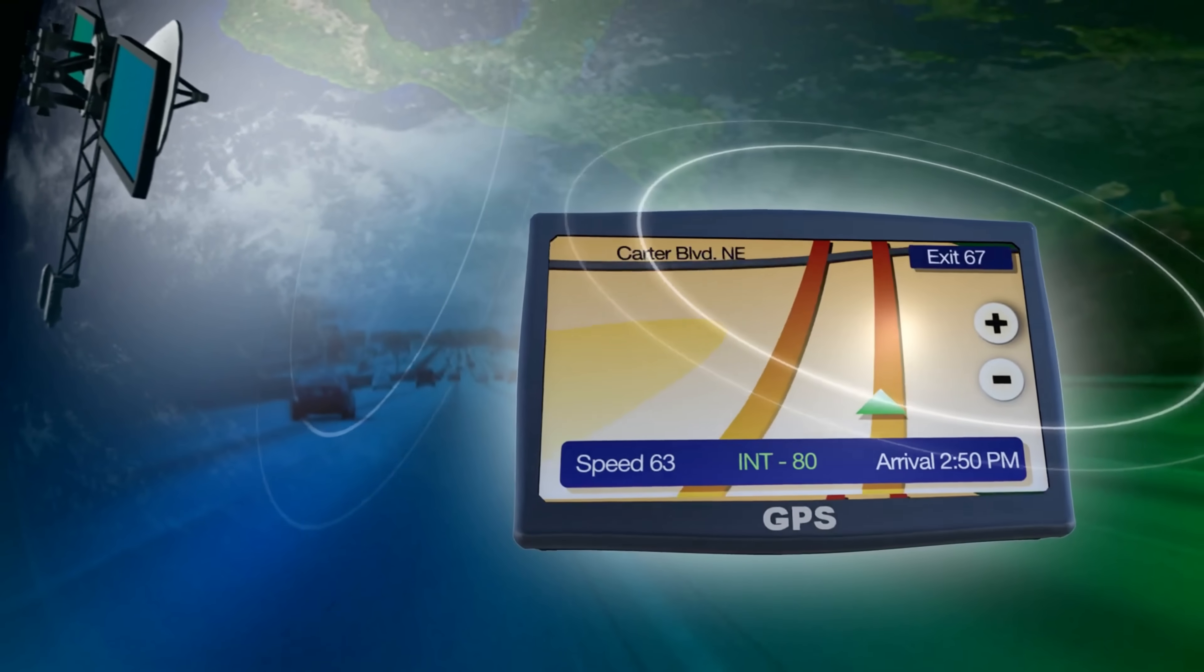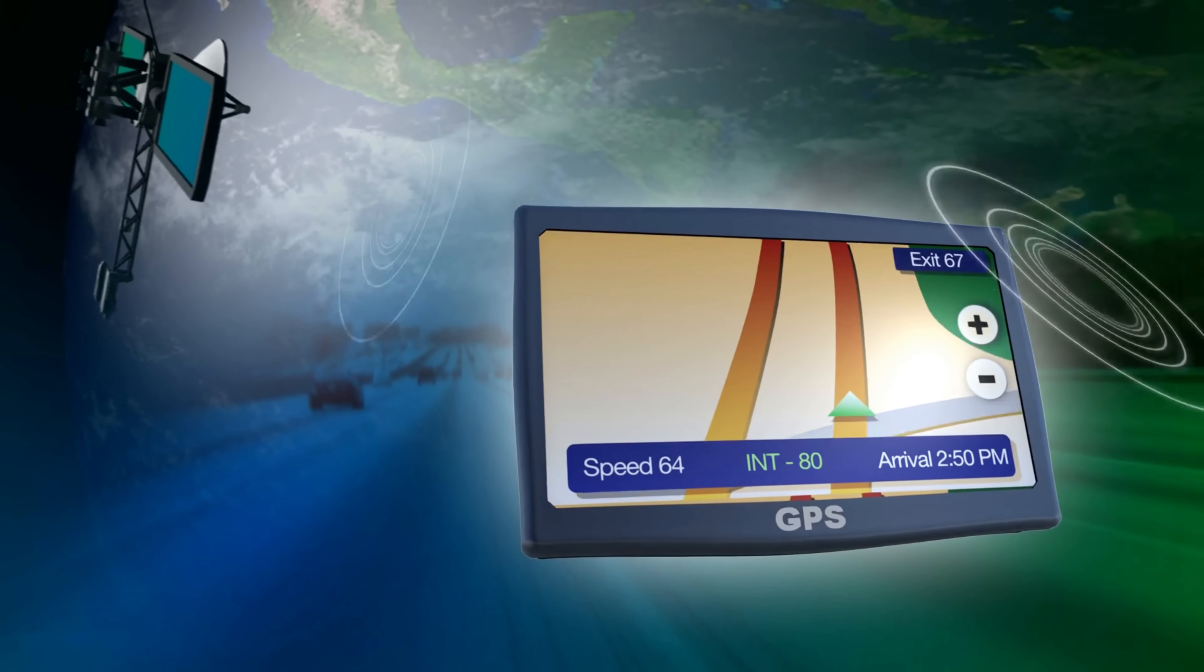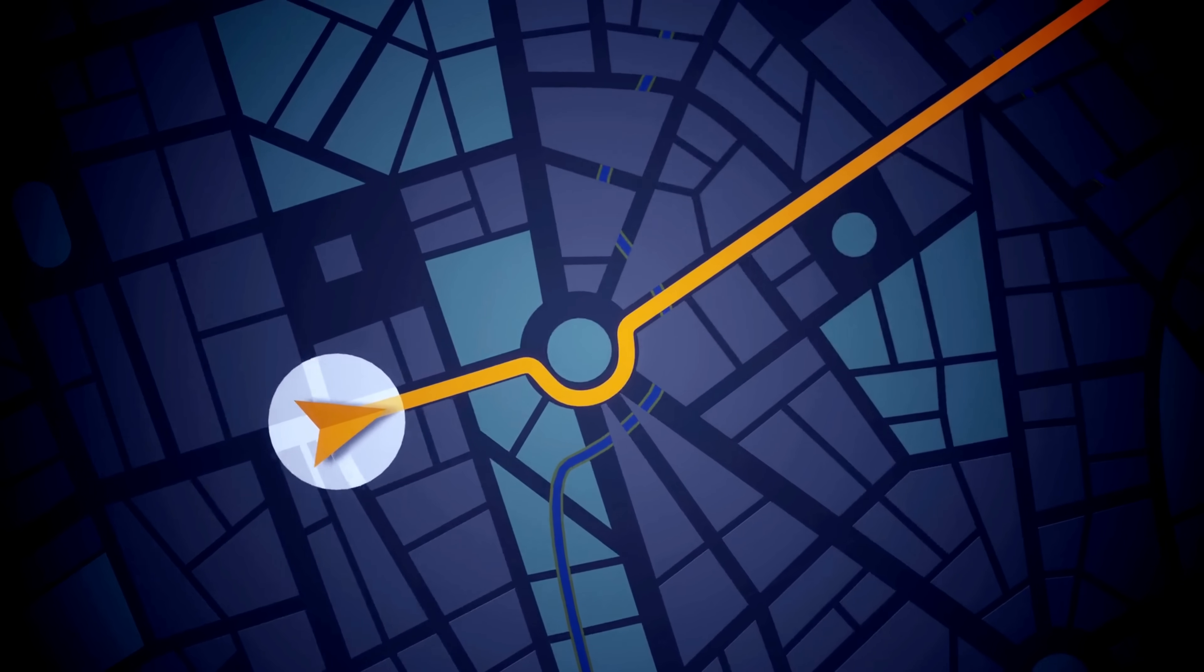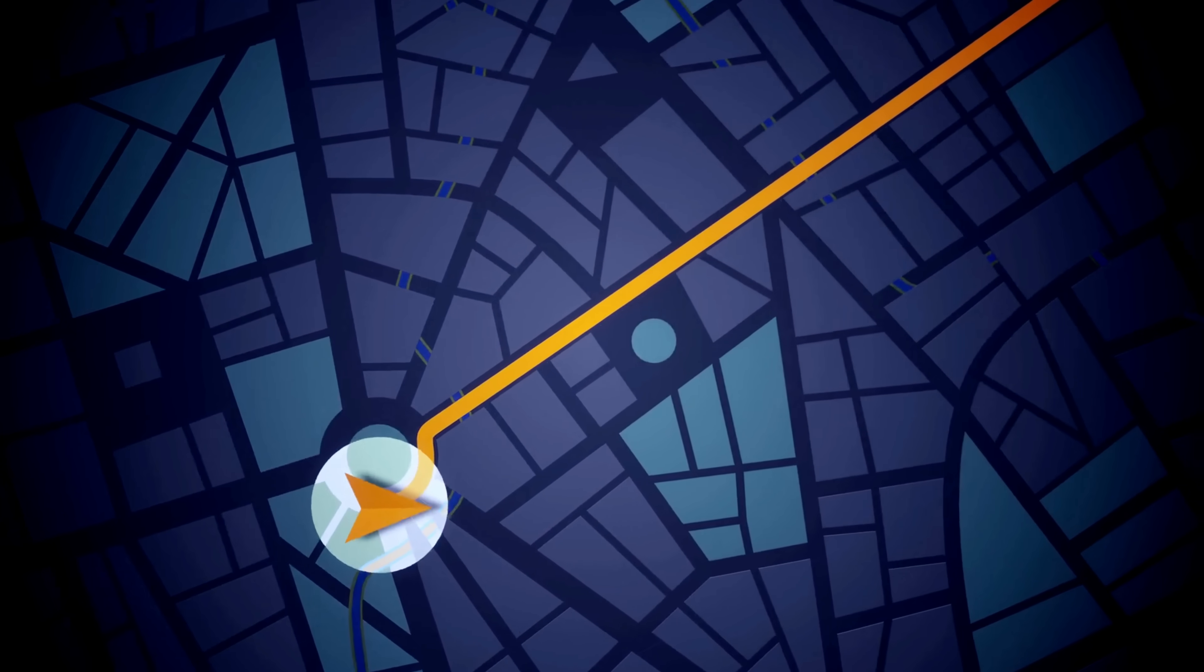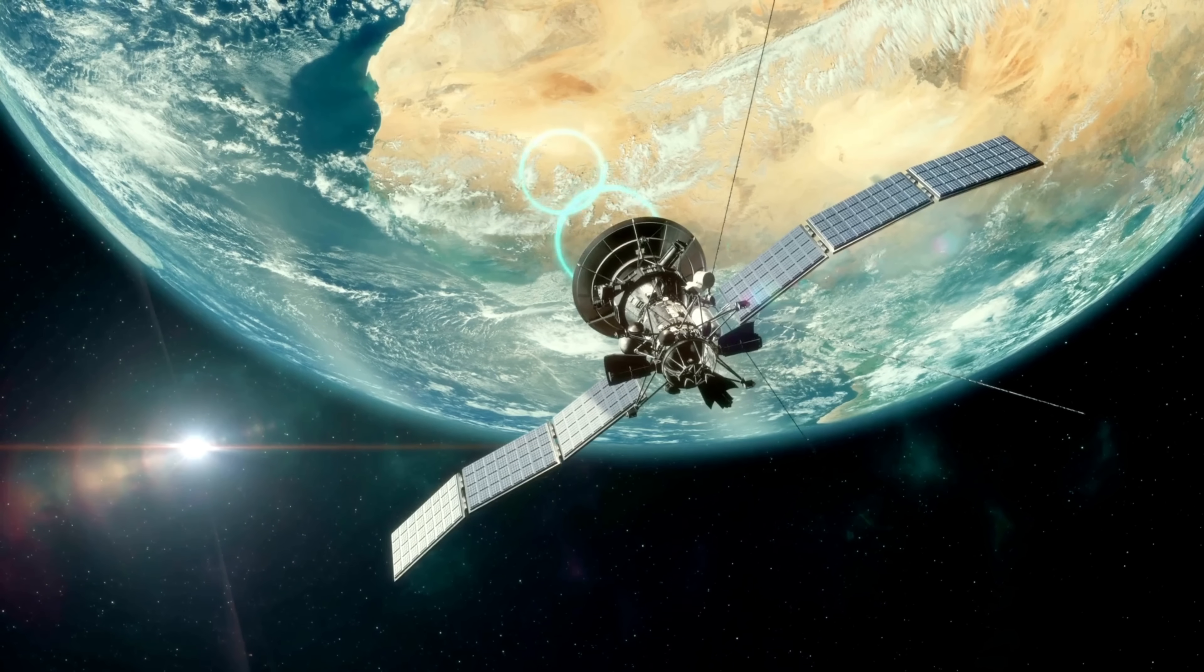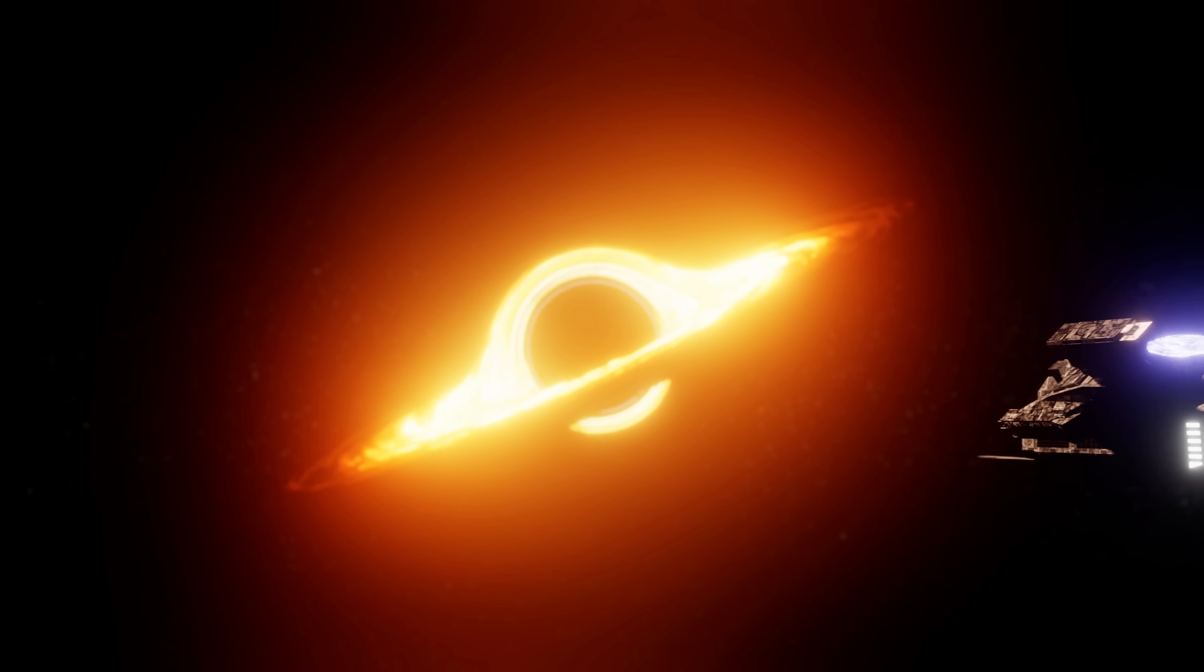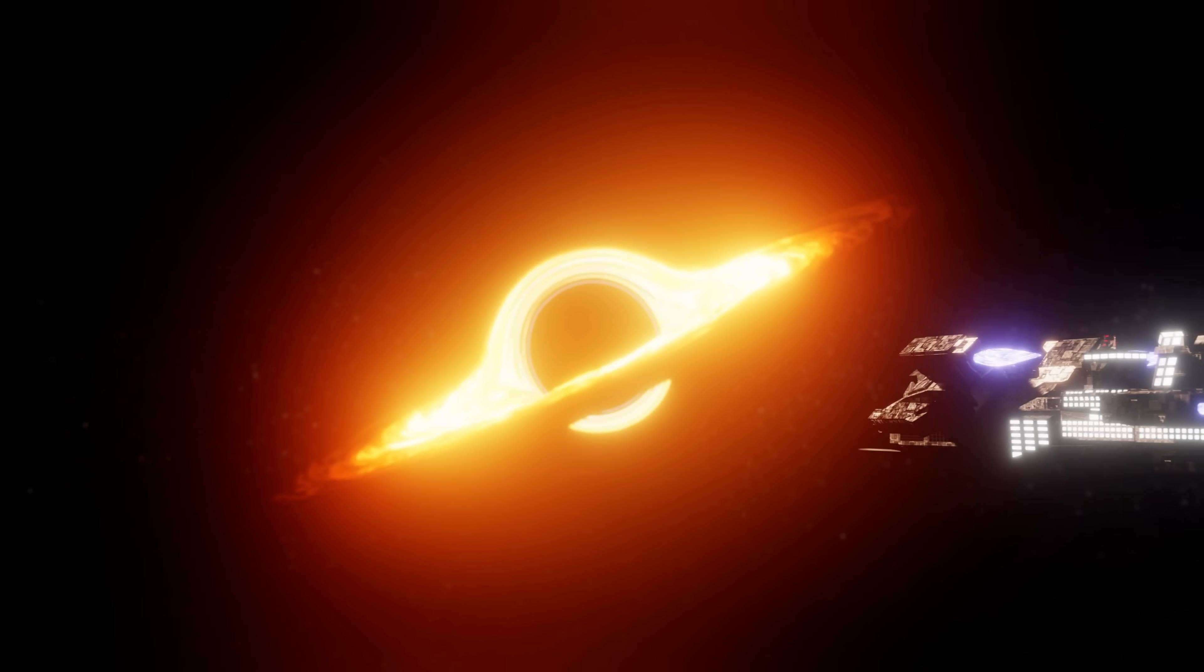In fact, the GPS system in your phone has to constantly adjust for this effect. If it didn't, your map location would be off by kilometers in just a single day. Einstein's theory of general relativity didn't just change science, it reshaped how we think about reality itself.